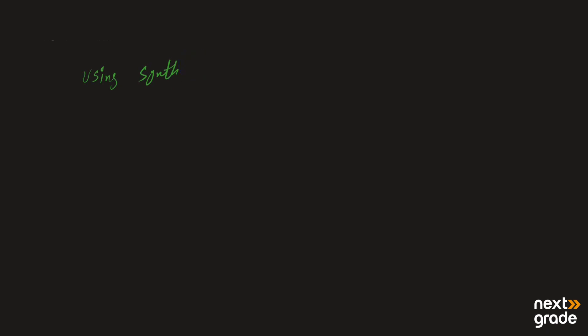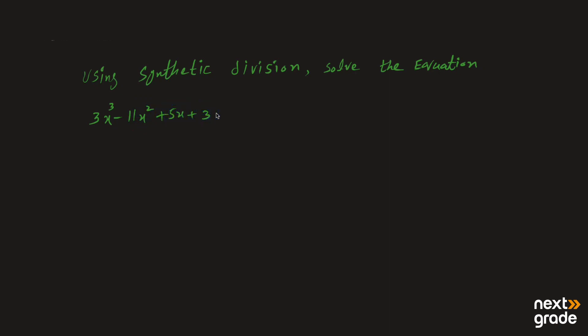In this video we will solve a cubic equation with the help of the synthetic division method, if one root of the equation is given. Using synthetic division method, solve the equation. The equation is 3x³ minus 11x² plus 5x plus 3 is equal to 0.